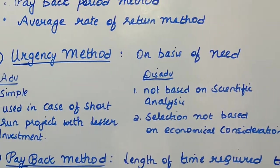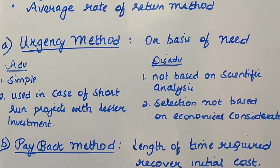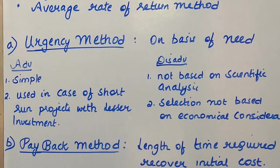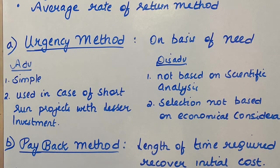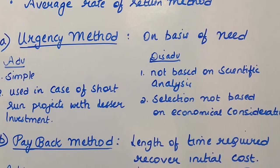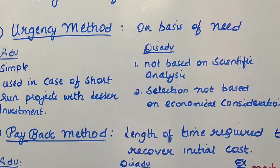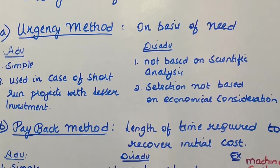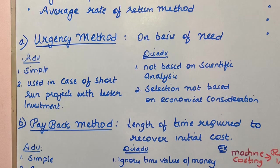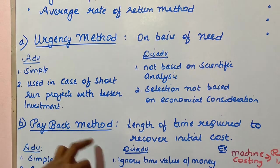Coming to the second traditional method, that is the payback method. The payback method is generally the simplest of all the traditional methods. In the payback method, a project is generally selected or appraised on the basis of payback period. Payback period means the length of time a project needs to recover its cost — that is, the time required for a project to recover its cost.